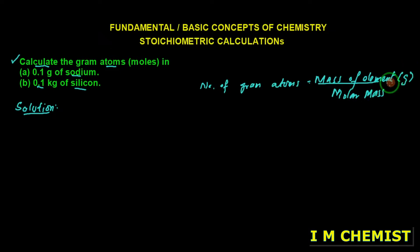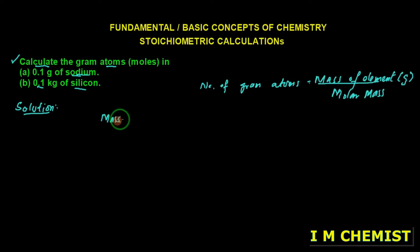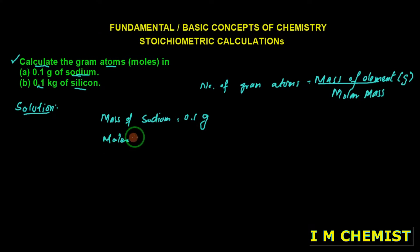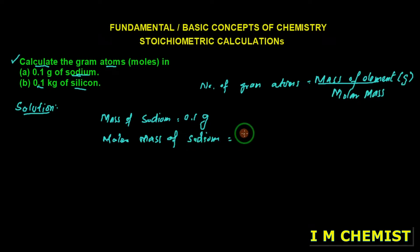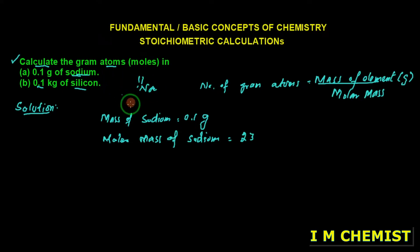The molar mass should be in grams. In the question, sodium is given. The mass of sodium is 0.1 gram, and the molar mass of sodium is 23. Note that the atomic number for sodium is 11, while the molar mass for sodium is 23.